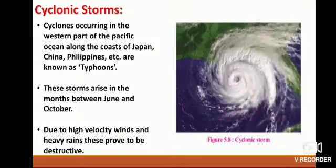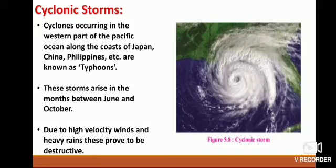Cyclonic Storms. Cyclones occurring in the western part of the Pacific Ocean along the coast of Japan, China, Philippines, etc. are known as typhoons. These storms arise in the months between June and October. Due to high velocity winds and heavy rains, these prove to be destructive.